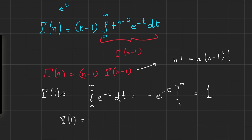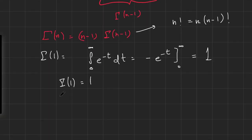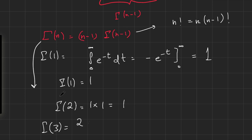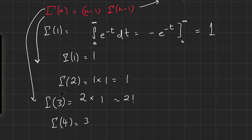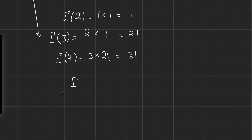Using the functional equation, plugging in n equals 2: gamma of 2 equals 1 times gamma of 1, which is 1. Plugging in n equals 3: gamma of 3 equals 2 times gamma of 2, which is 2 — that's 2 factorial. Plugging in n equals 4: gamma of 4 equals 3 times gamma of 3, which is 3 factorial. And it's not hard to see, continuing this argument, that gamma of n equals n minus 1 factorial.